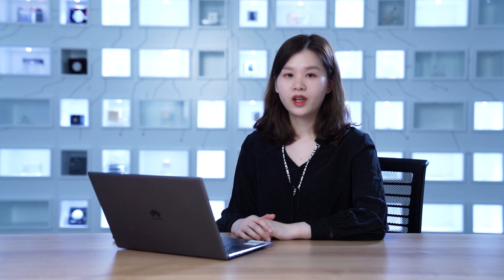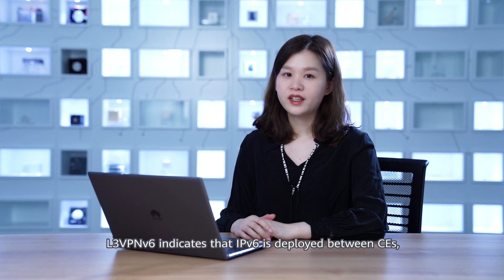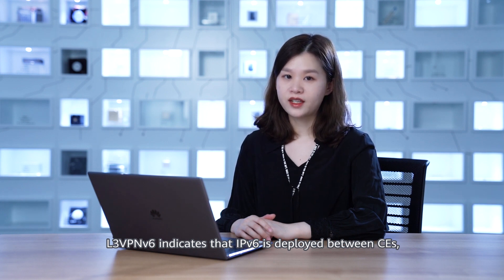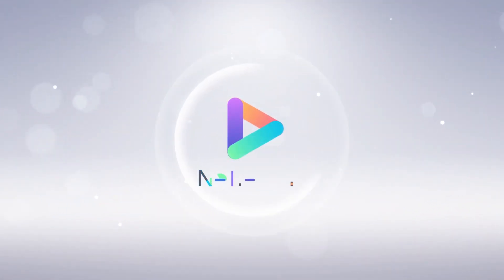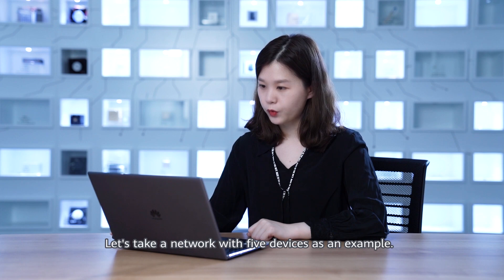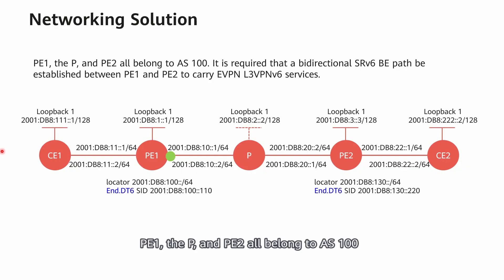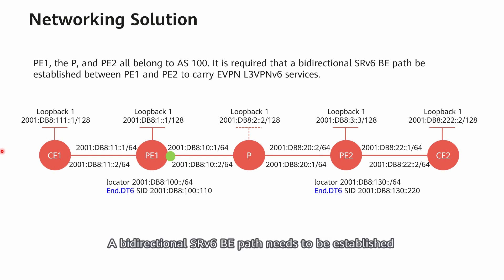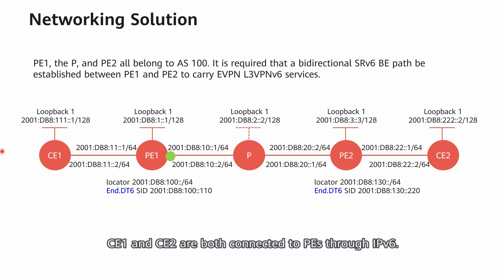From the perspective of the control plane, EVPN is a BGP-specific extension. L3 VPNv6 indicates that IPv6 is deployed between CEs, which access PEs through L3 VPN. Let's take a network with five devices as an example. P1, P, and P2 all belong to AS100 and reside on the public network. A bidirectional SRV6 BE path needs to be established between P1 and P2 to carry EVPN L3 VPNv6 services. C1 and C2 are both connected to PEs through IPv6.